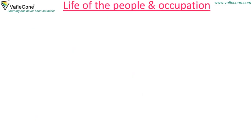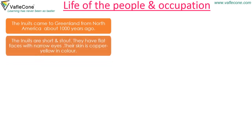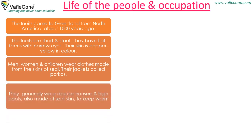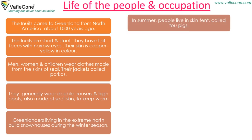Life of the people and occupation. The Inuits came to Greenland from North America about a thousand years ago. The Inuits are short and stout, with flat faces, narrow eyes, and copper-yellow skin. Men, women, and children wear clothes made from the skins of seal. Their jackets are called parkas. They generally wear double trousers and high boots also made of seal skin to keep warm. Greenlanders living in the extreme north build snow houses during the winter season. In summer, people live in skin tents called toepigs.